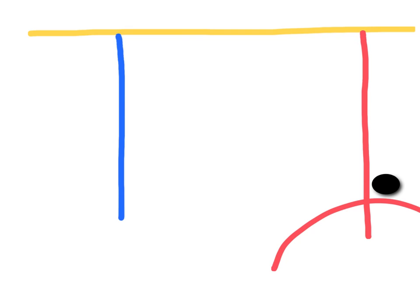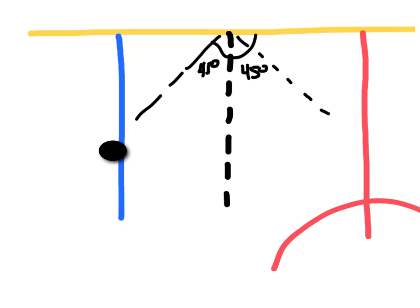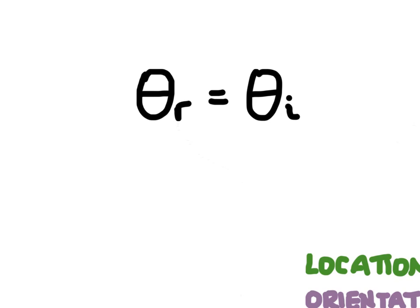Think about it this way: if a hockey player passes a puck, hockey pucks have to travel in a straight line. It's going to hit the boards and bounce off at the same angle it came in at. If I draw a perpendicular line to the boards and the puck comes in at a 45-degree angle, it's going to bounce off and leave at another 45-degree angle. Light can't change to a different angle after bouncing off a surface. We use the symbol theta to indicate angles, so the angle of reflection equals the angle of incidence.